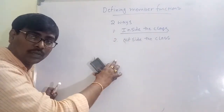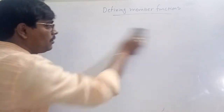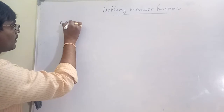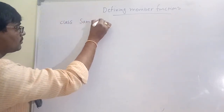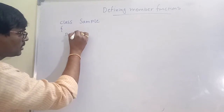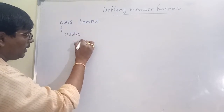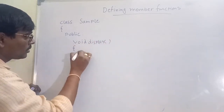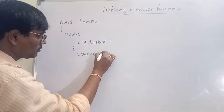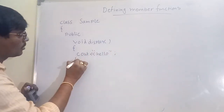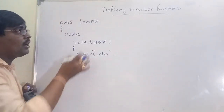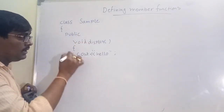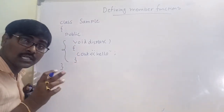We will consider two examples for each one. First, I am writing a simple example. Class Sample, public — with one member function 'display'. The function body contains cout << Hello. This is called the definition — opening brace, closing brace, with a set of statements inside. This is defined inside the class.